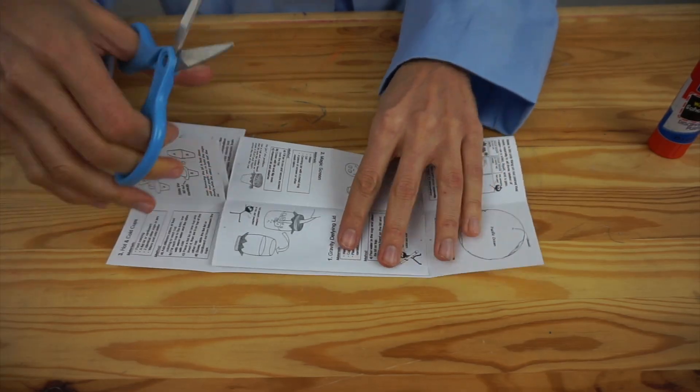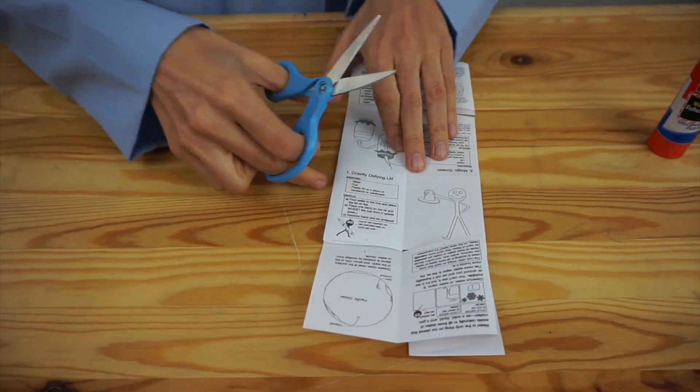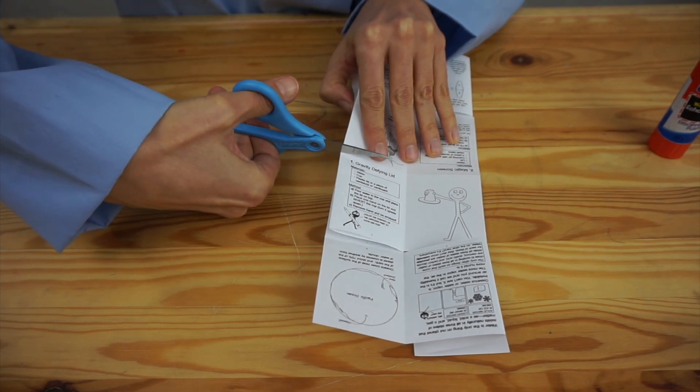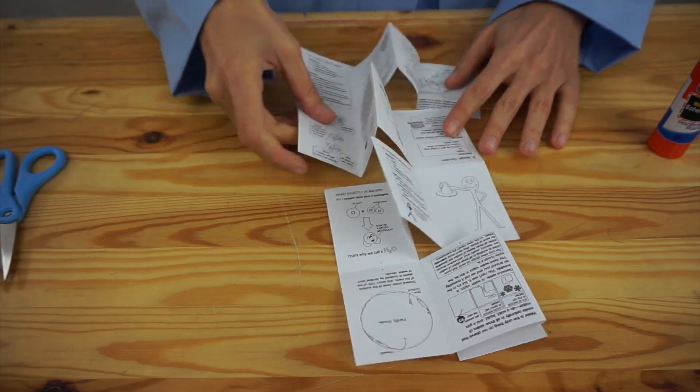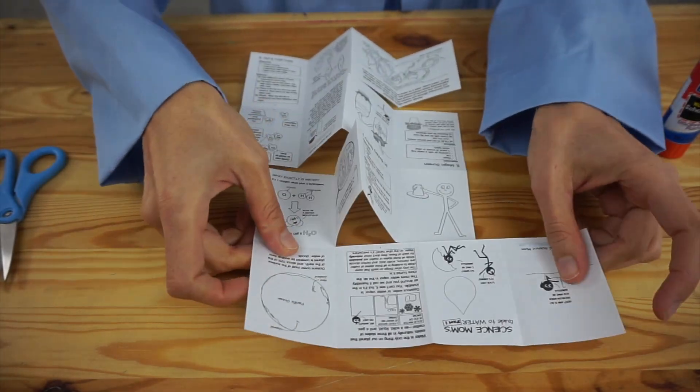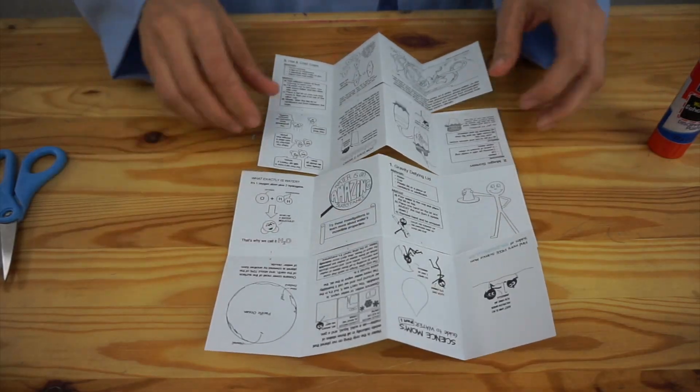and then turn it over and make your cut on the other side. Now all our cuts are done, and I'll unfold it and show you what it looks like. We have three cuts going alternate directions.